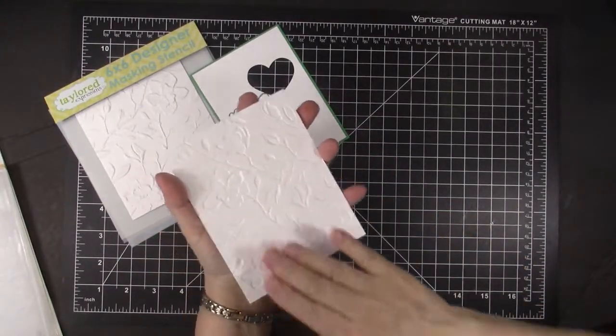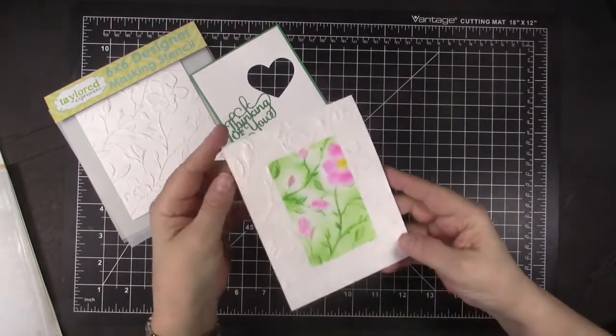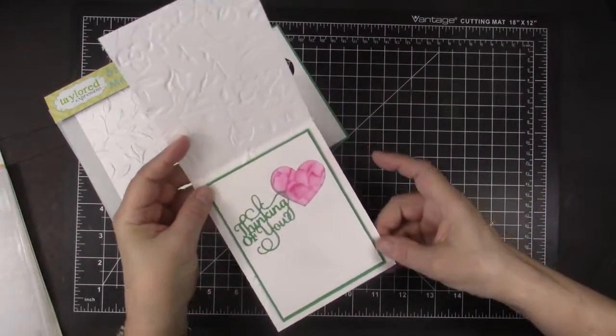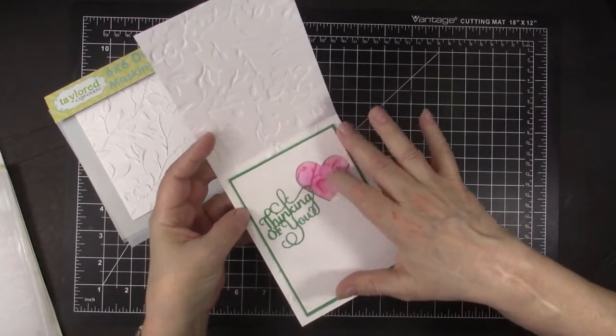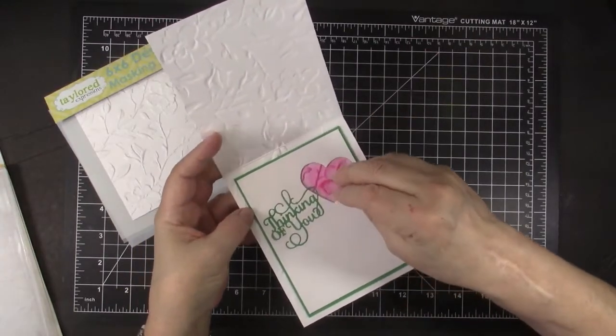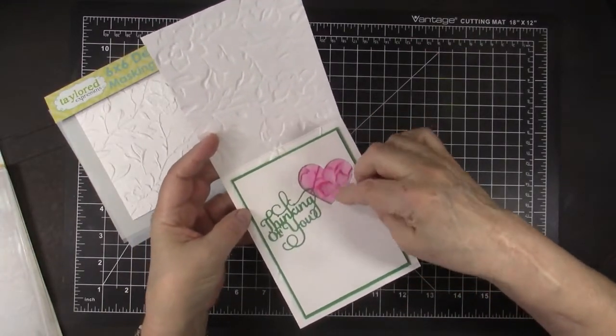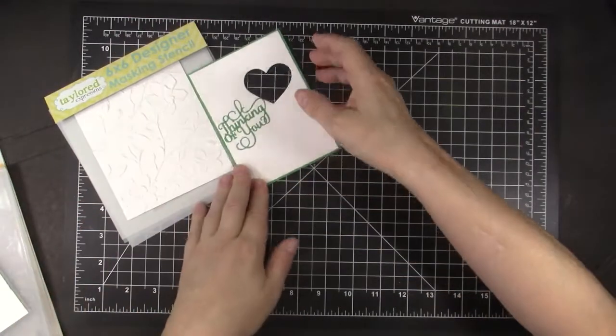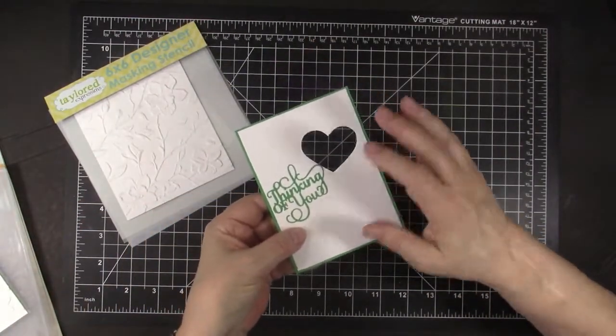I love to do embossing throughout the whole card. So even on the back, it has that beautiful debossed look. On this part here is debossed, and this part is embossed. And then I cut a heart hole out of the center piece. I'm going to show you how I achieved that look as well.